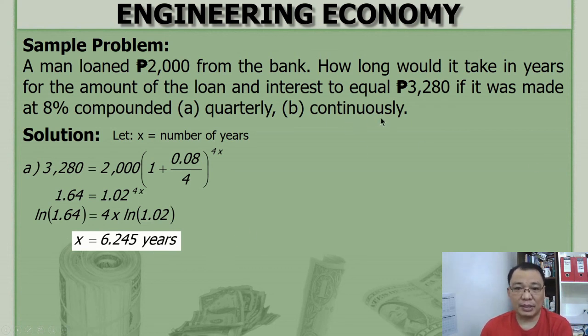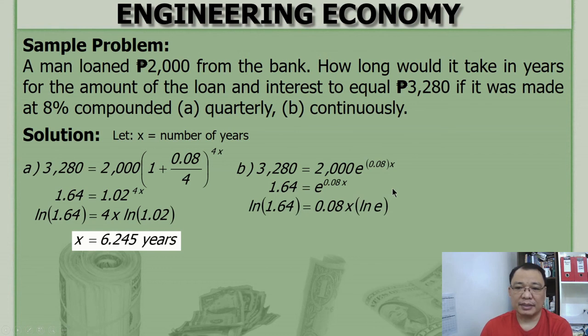For letter B, continuously. F is equal to P times e raised to r times n. Same, divide 2,000 on the left side. And get the LN of both sides. And we all know from logarithms that LN of e is equal to 1. To solve for x, divide LN 1.64 divided by 0.08. And the answer is 6.184 years.